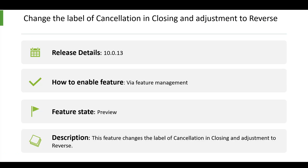The next point is not a feature but a change in the inventory closing and adjustment form — relabeling the 'Cancellation' button to 'Reverse.' This is to avoid user confusion and to reflect the real nature of the reverse process, as the system is reversing the ended record, not canceling. This feature has been applied since App 10.0.13 and will be on by default in App 10.0.21. If you prefer the old labeling, you can turn off this feature from the feature management workspace by finding the feature called 'Change the label of cancellation in closing and adjustment to reverse' and disabling it.